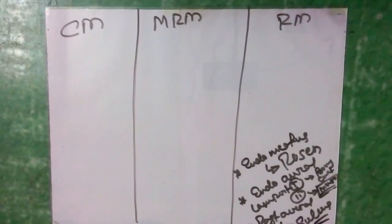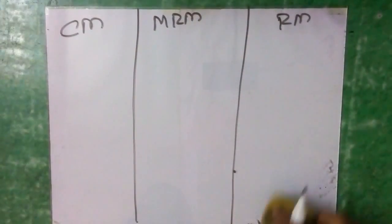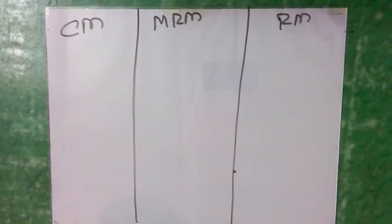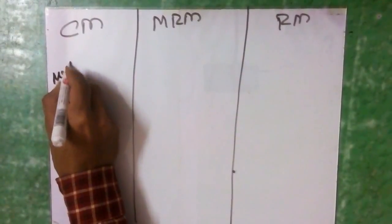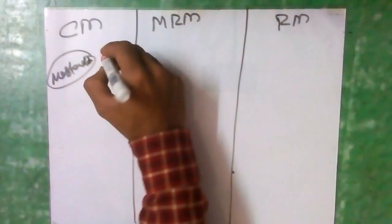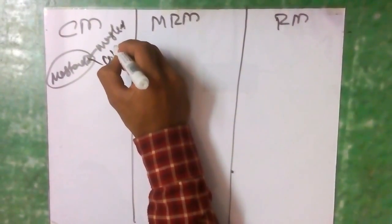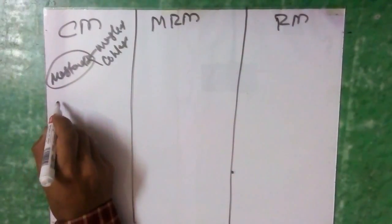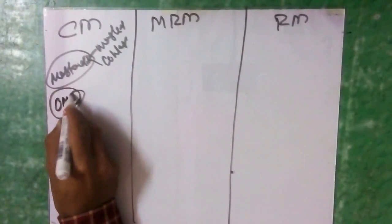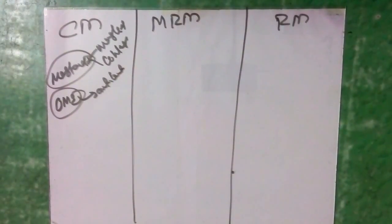Regarding cortical mastoidectomy: this is performed for mastoiditis — either coalescent or masked mastoiditis — and also for secretory otitis media (OME) resistant to antibiotics.